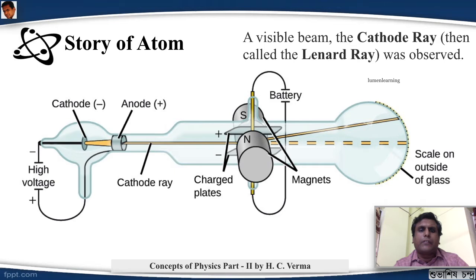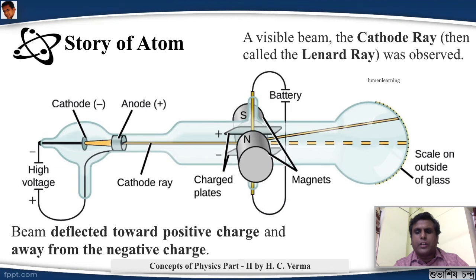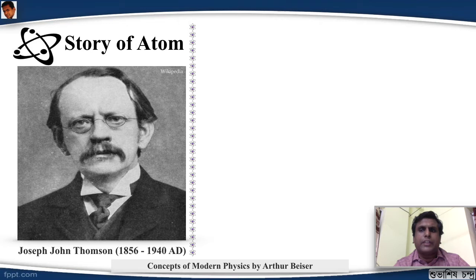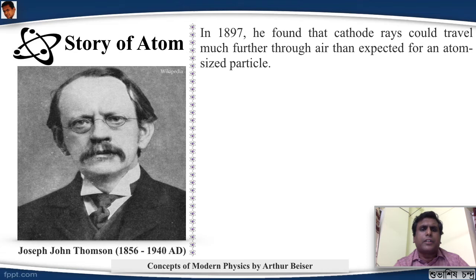He saw that the beam gets deflected towards the positive charge and away from the negative charge. Also, it is deflected according to the magnetic field strength. This helped him to calculate the charge to mass ratio of the particles, the cathode ray particles.